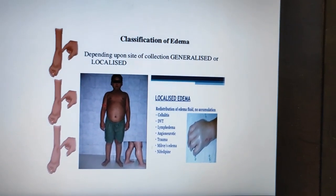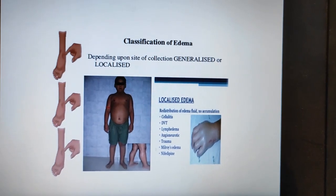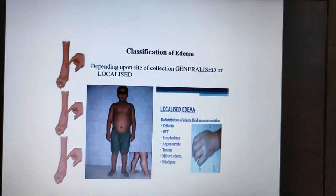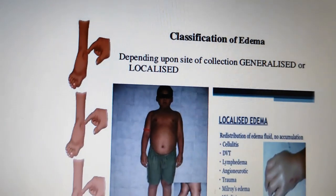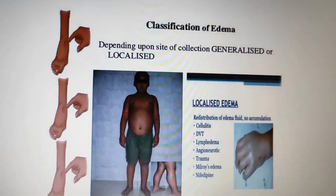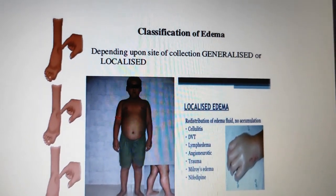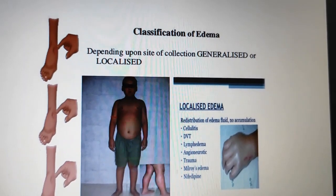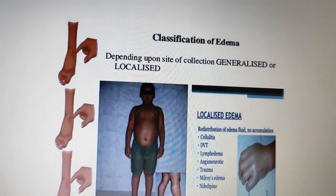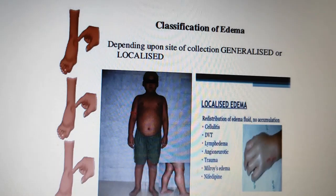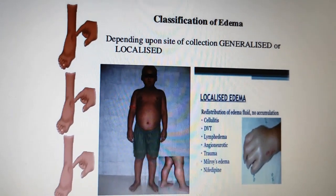The classification of edema depends on the site of collection. There is generalized edema or localized edema. Generalized edema means the whole body is affected, and when a large amount of fluid is collected throughout the body it is called anasarca. Localized edema can be due to lymphedema, DVT, cellulitis, trauma, and similar conditions.